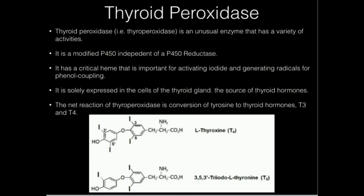We've been talking about molecules derived from amino acids. We're going to talk about one molecule or set of molecules derived from tyrosine, and those are called thyroid hormones.